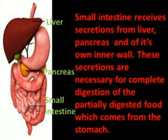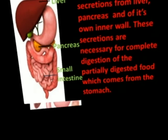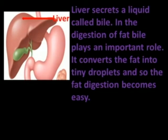The small intestine receives secretions from the liver, pancreas, and its own inner wall. These secretions are necessary for the complete digestion of the partially digested food which comes from the stomach. The liver secretes a liquid called bile. In the digestion of fat, bile plays an important role. It converts fat into tiny droplets, making fat digestion easier.